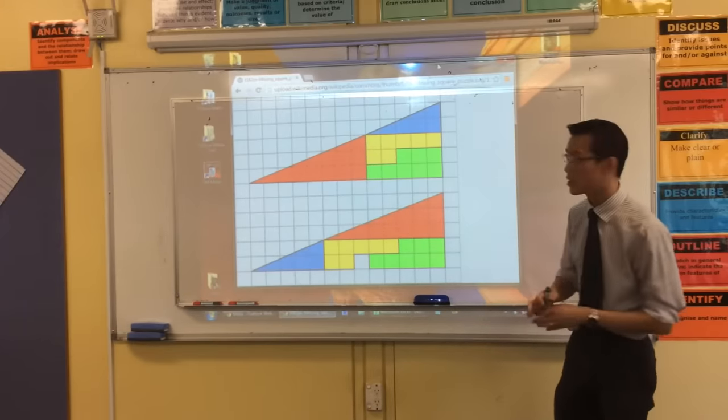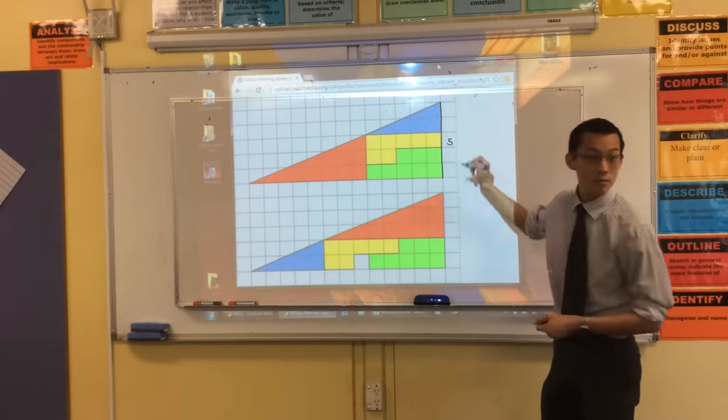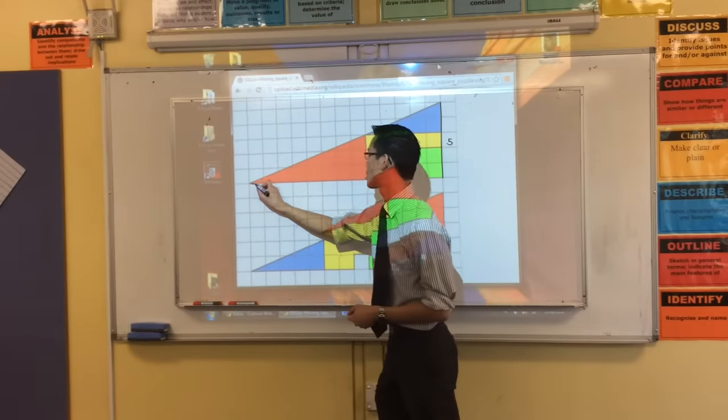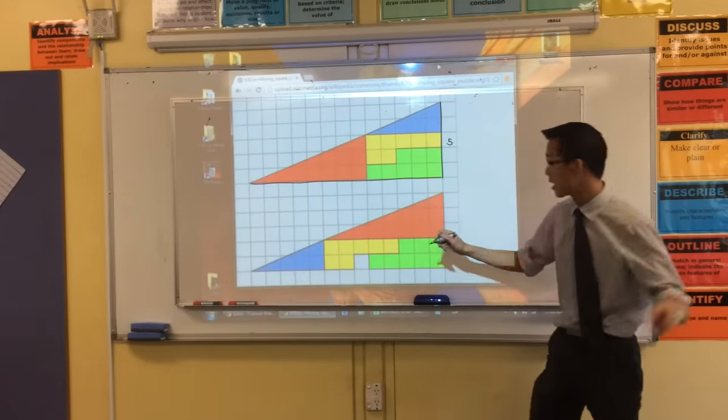And you can look at the dimensions of the triangle. It's got a height of 5, and help me count, what's the width? Or the base rather? What's the base? 13? Yeah, okay, 13.